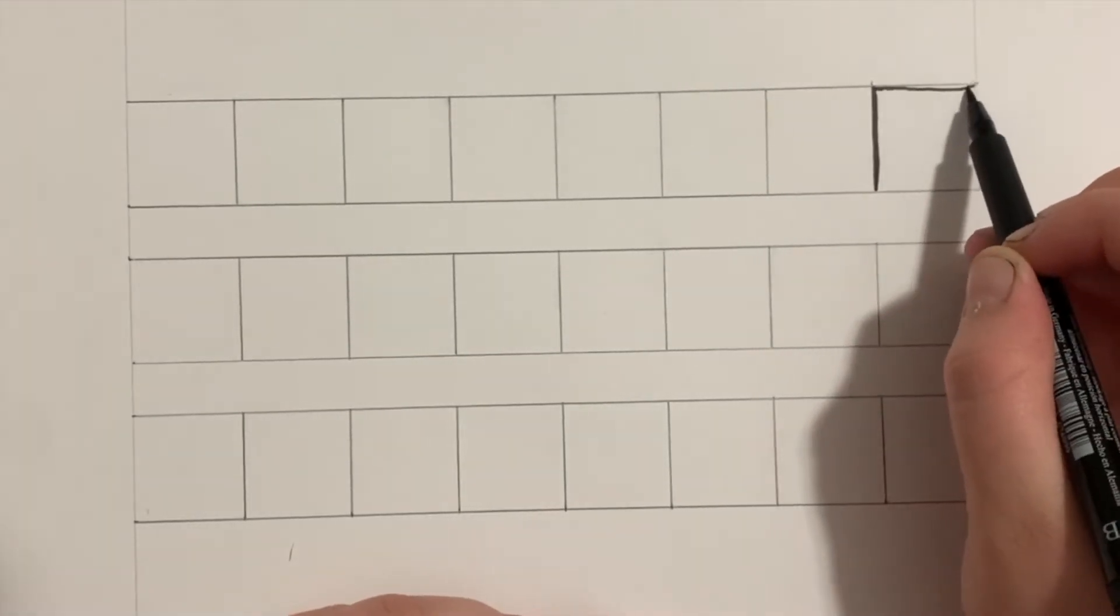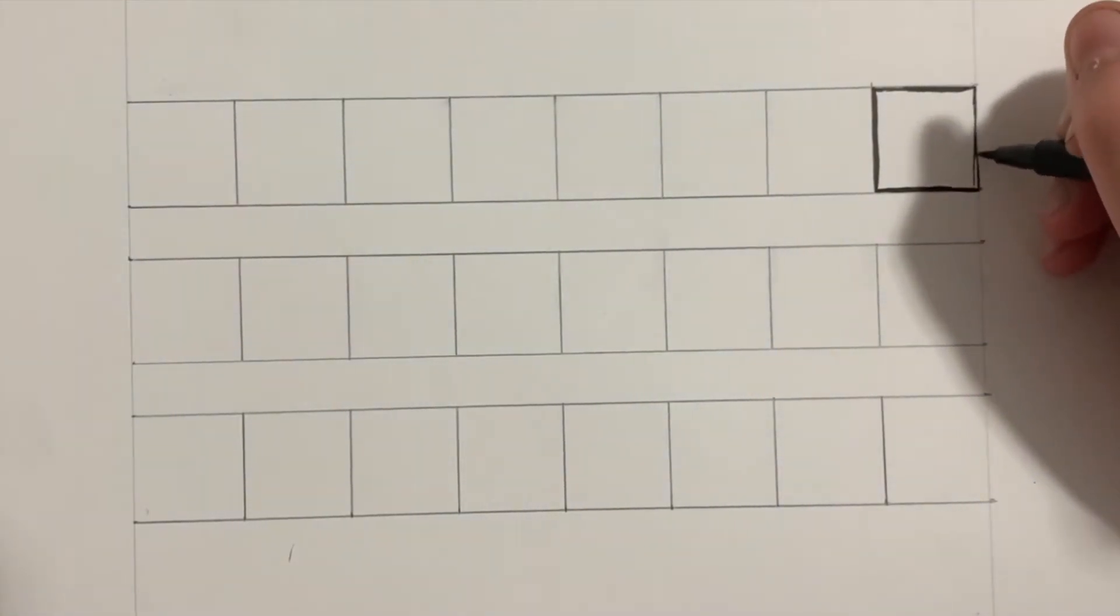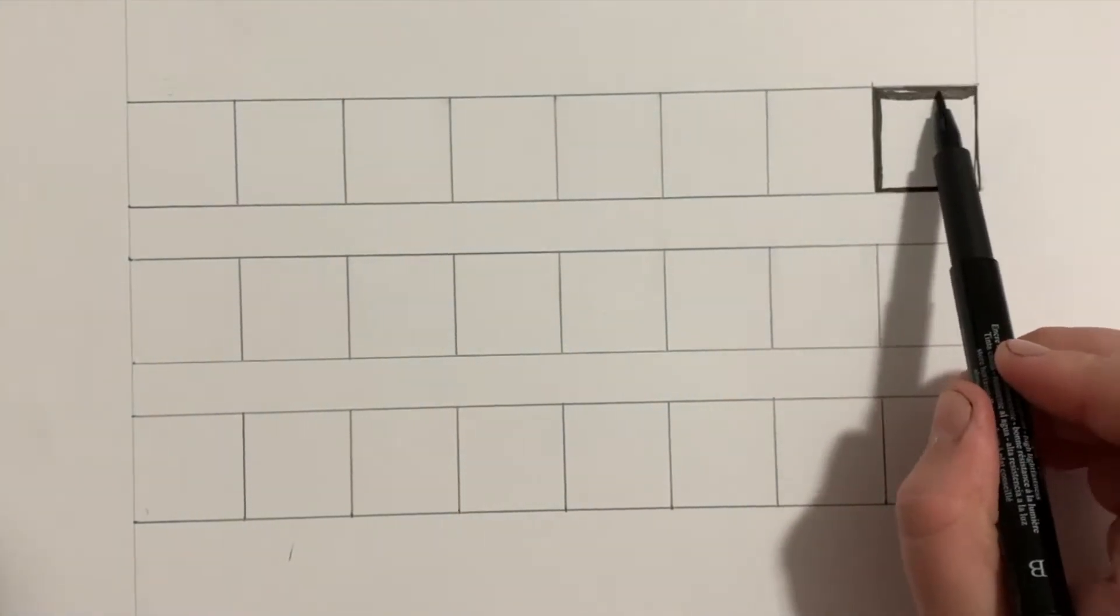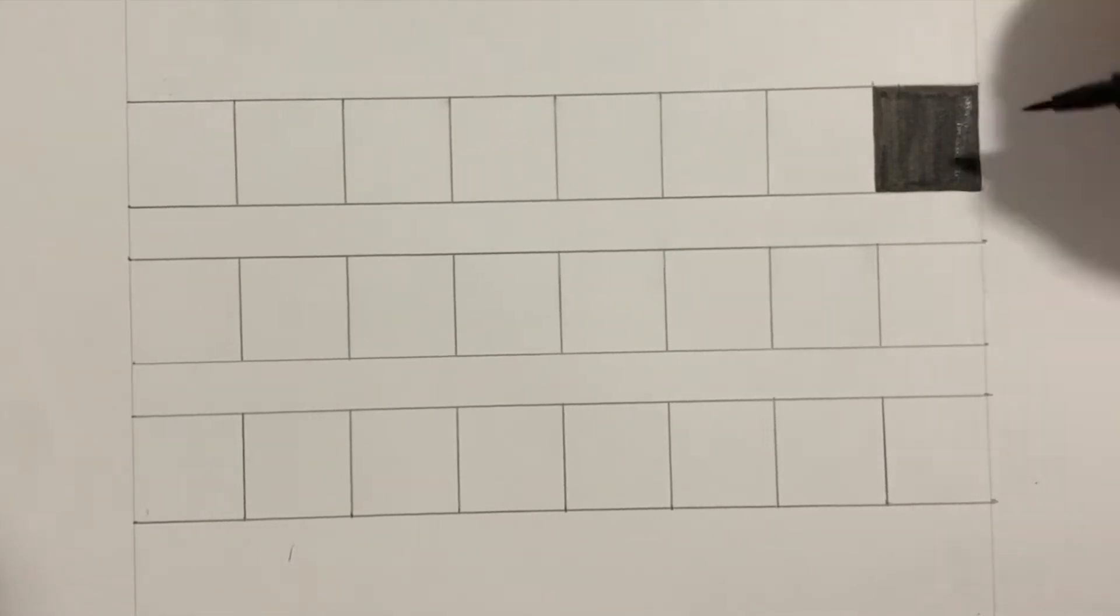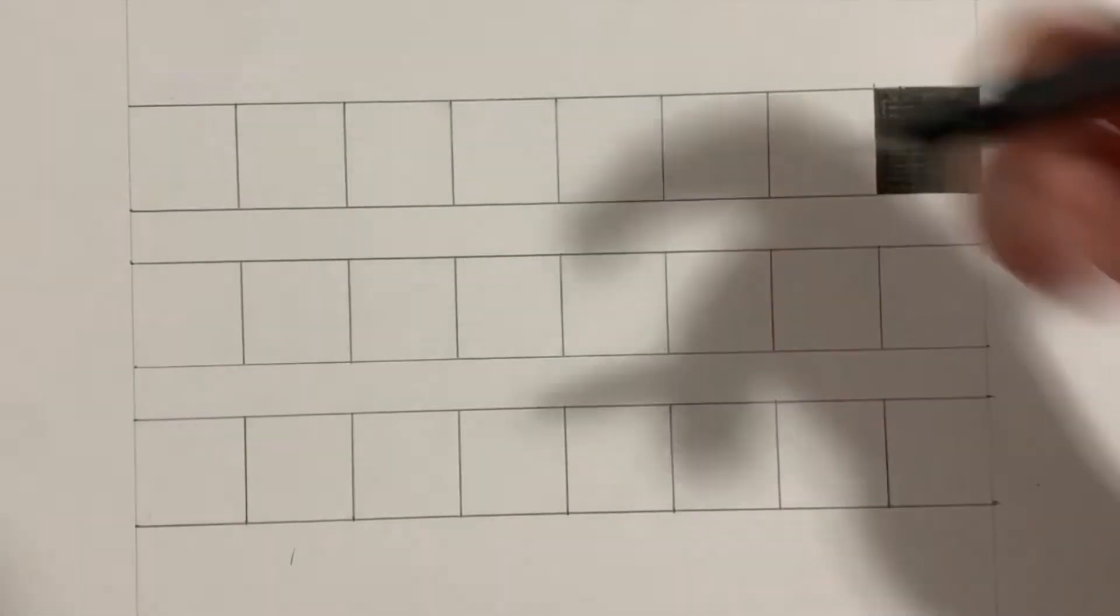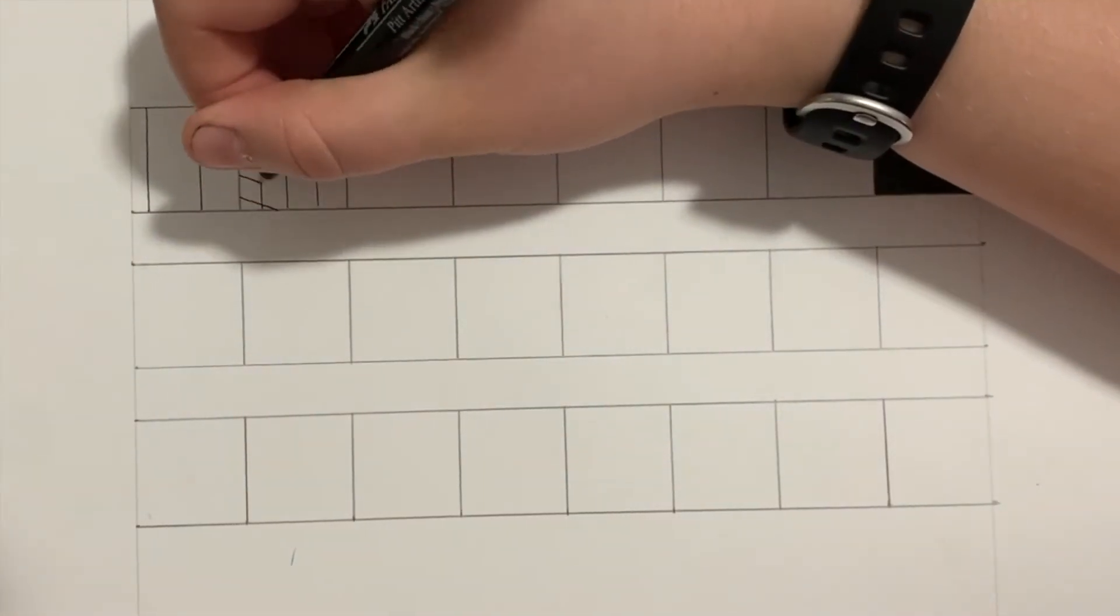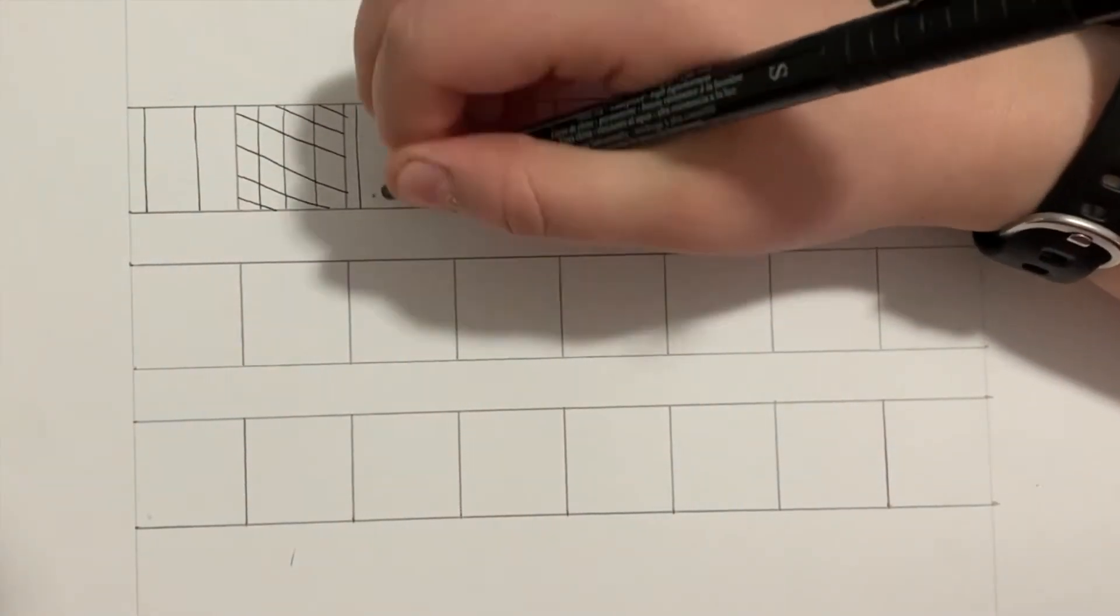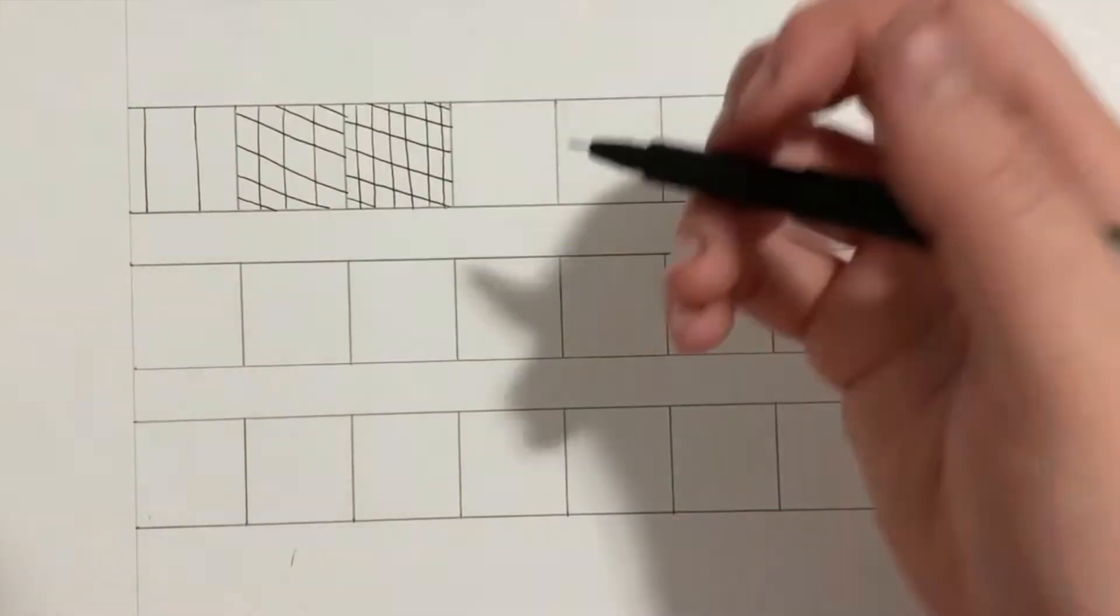First I'm going to start with hatching and cross-hatching. This last square is going to be my totally black square and I'm going to fill it in, then cross-hatch on top of it so that you can see the texture. Whatever you draw in pen you're going to see reflected. You can see the vertical and horizontal lines that I just filled in.